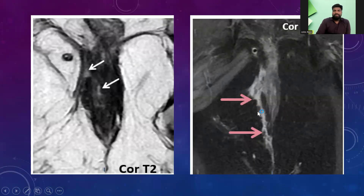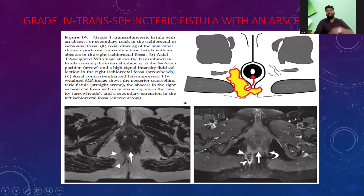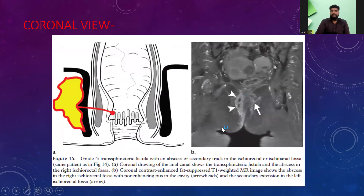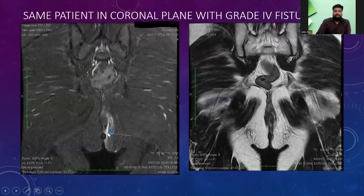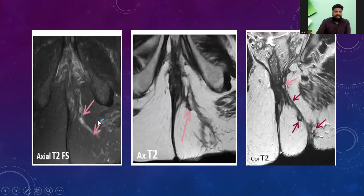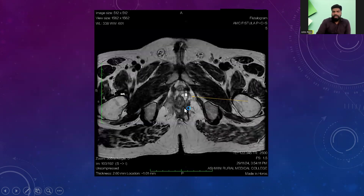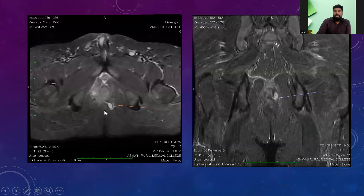Grade 4 is the transsphincteric fistula with an abscess. The abscess is causing extension through both sphincters, as seen in the images. This is the coronal view of Grade 4. Actual cases from our tertiary care center showing Grade 4 fistula are shown. T2 sequences give better delineation. Axial T2 fat-suppressed sequences are shown here, with the Grade 4 fistula marked by arrows.